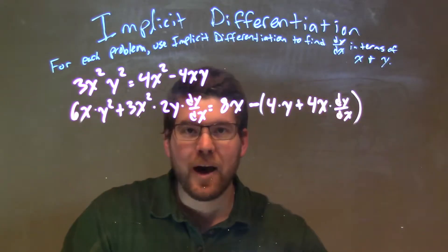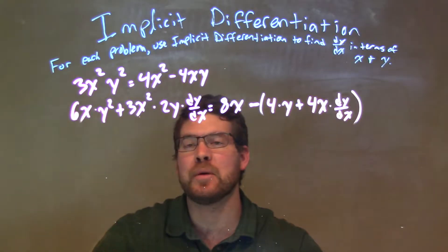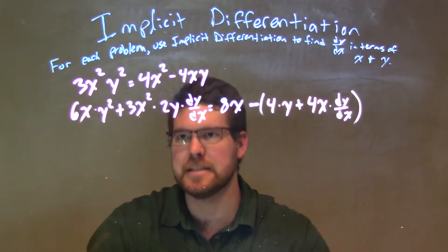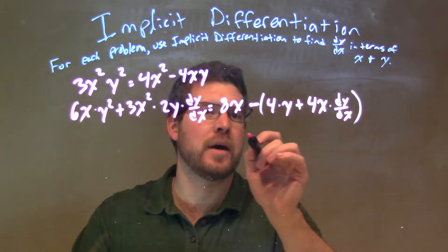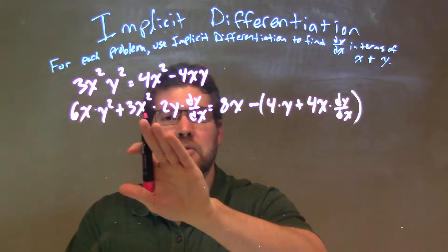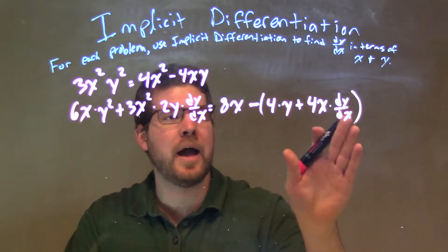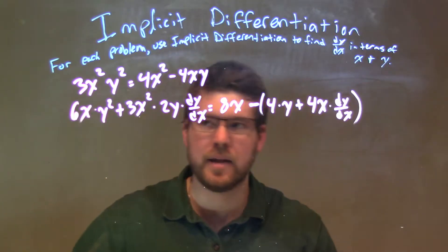Okay, so now we want to get dy/dx's all to one side. That's our ultimate goal, the rest is just algebra here. So to do that, first let's distribute this minus sign across to put all parts here, and then we're going to add this dy/dx to this side and subtract this 6xy² from the right-hand side.